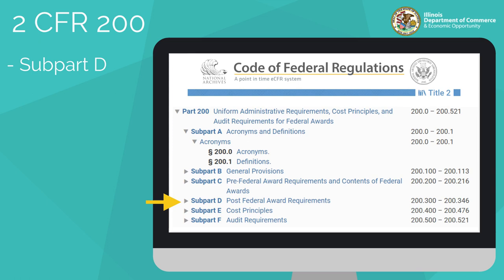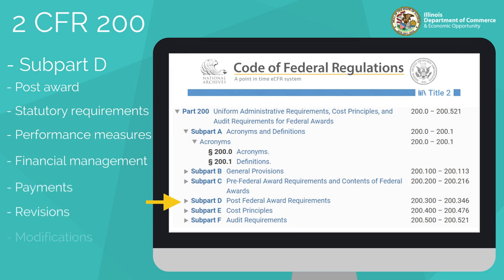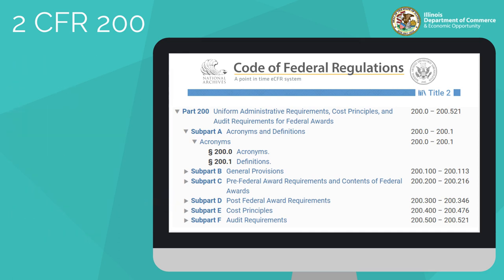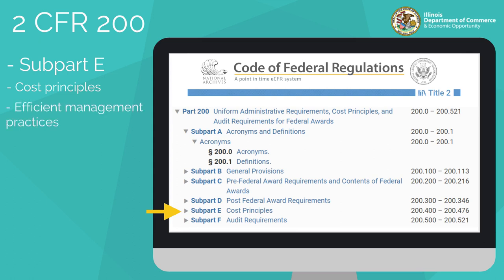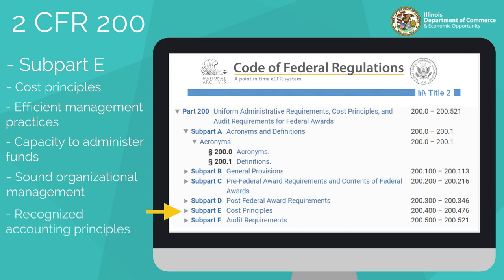Subpart D defines post-award requirements such as statutory requirements, performance measures, financial management, payments, revisions, and modifications. Subpart E covers cost principles. This section addresses the obligation of the grantee to have efficient and effective management practices, have the capacity to administer the grant funds as set forth in the grant agreement, and have sound organizational and management techniques to properly administer the award. Grantees are also responsible for following sound and recognized accounting principles and for applying indirect cost principles with consistency.